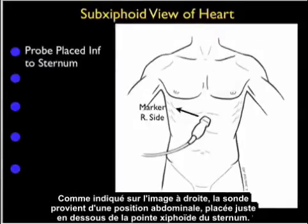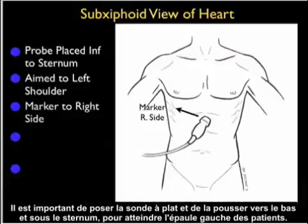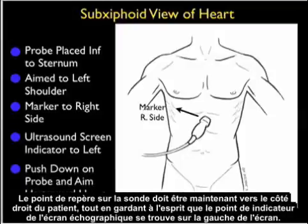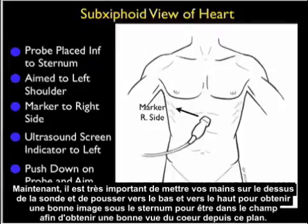As shown in the pictorial to the right, the probe is coming from an abdominal position placed just inferior to the xiphoid tip of the sternum. It's important to lay the probe flat and push down and under the sternum, aiming towards the patient's left shoulder. The marker dot on the probe should be over towards the patient's right side, with a caveat that the ultrasound screen indicator dot is over towards the left of the screen. It's very important to put your hands on top of the probe and really push down and up to get the good imaging plane underneath the sternum to make the angle to get a good view of the heart from this plane.